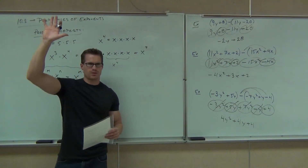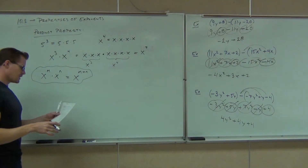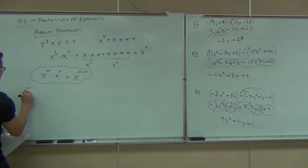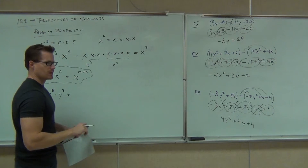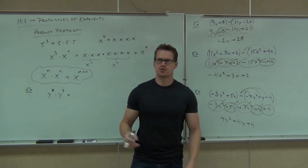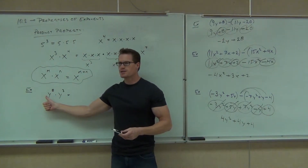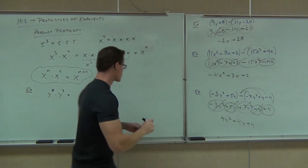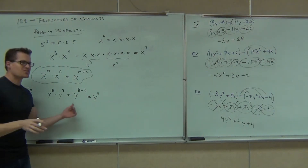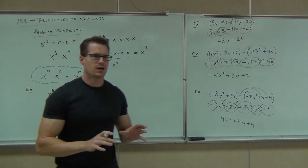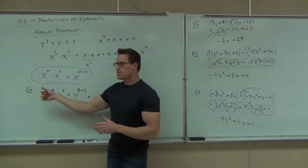You understand where the concept comes from, right? You could write them all out every single time if you want. Let's try a few examples. How much is y to the 8th times y to the 3rd? Are we going to get y to the 24th? No — y to the 11th power. You've got 8 y's here times another 3 y's there; add them all up and you get 11 y's. So this is y to the 8 plus 3, which is y to the 11th. Do I have to show the middle step? No — as long as you're getting it right. You're adding 8 plus 3.